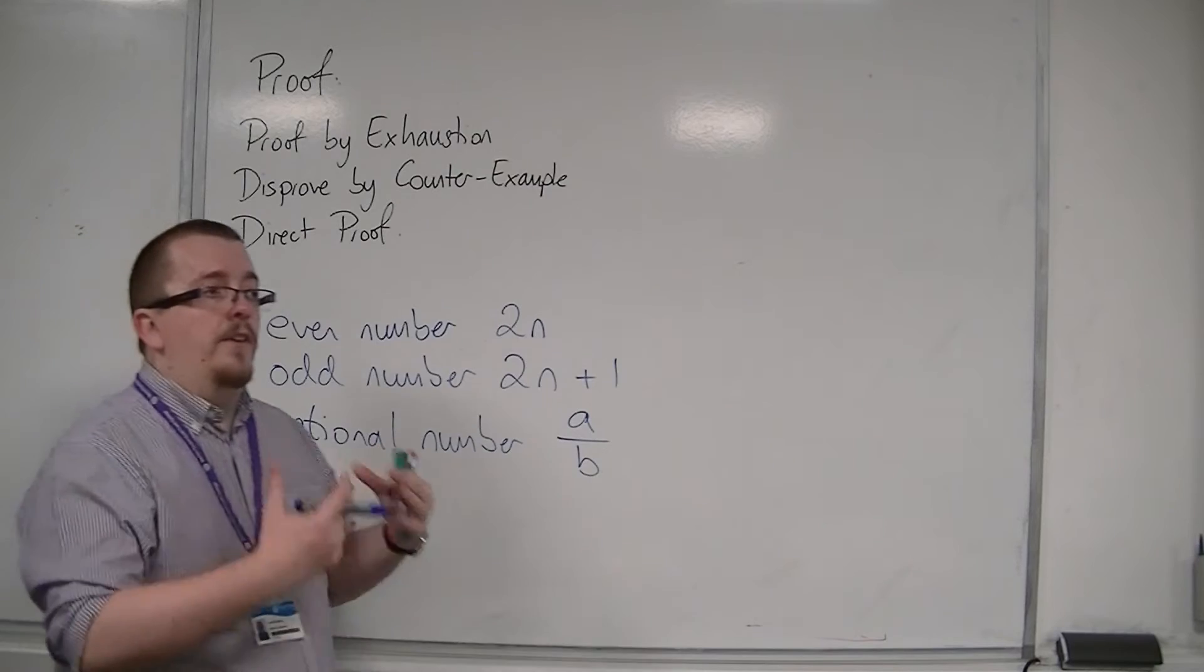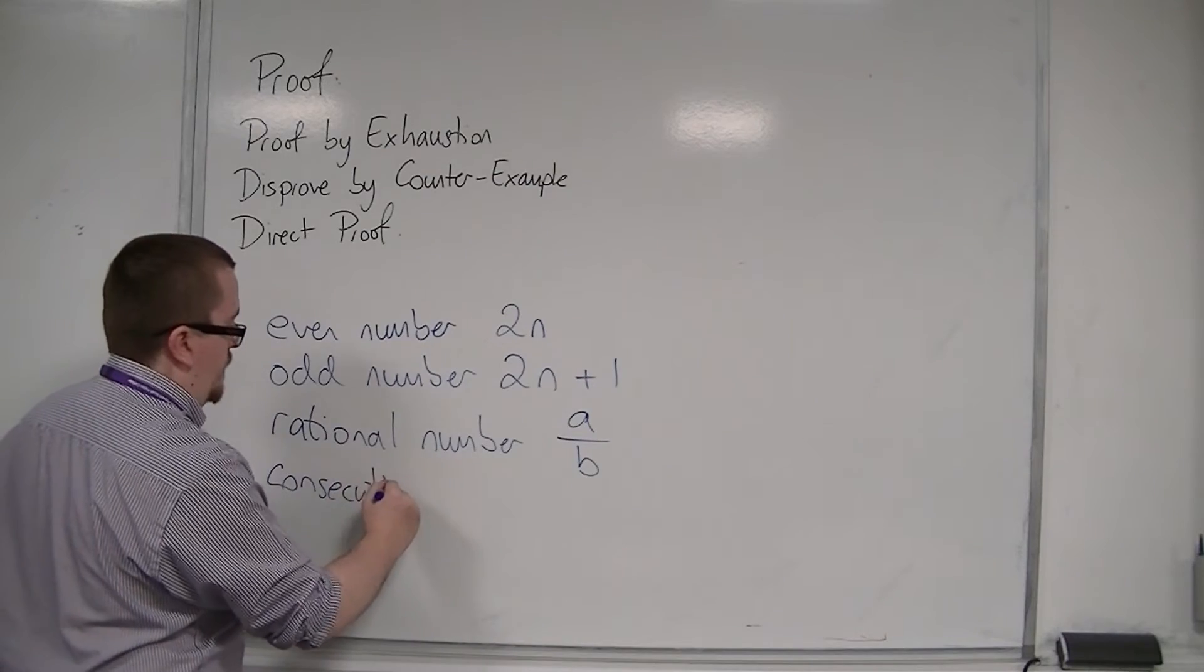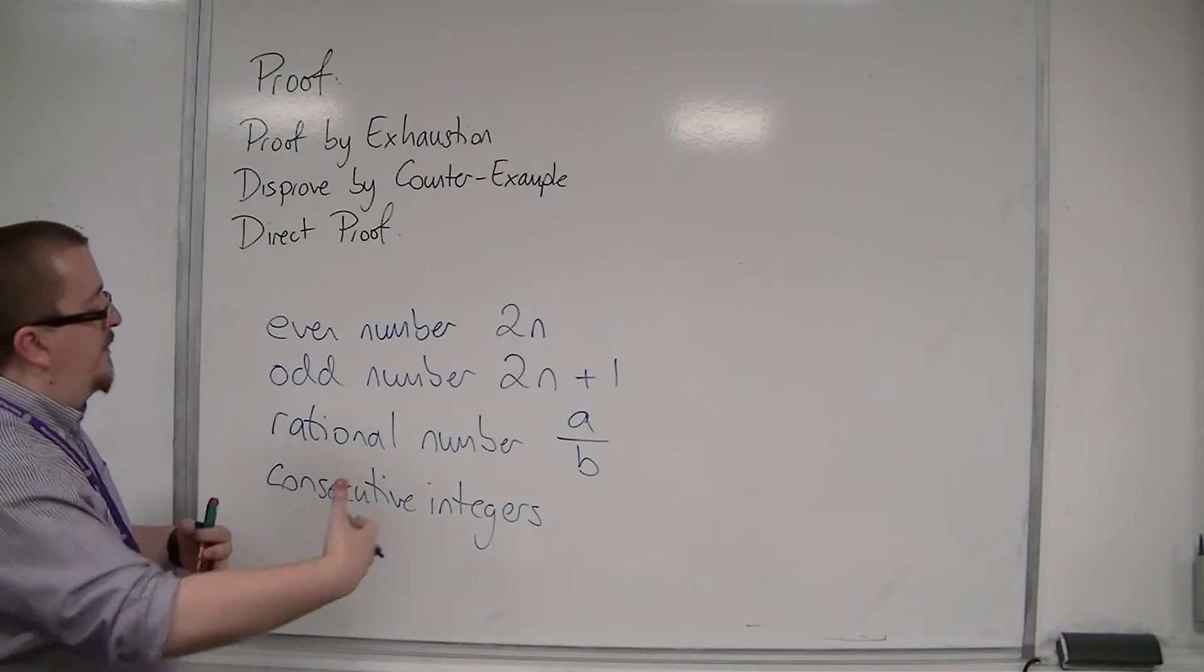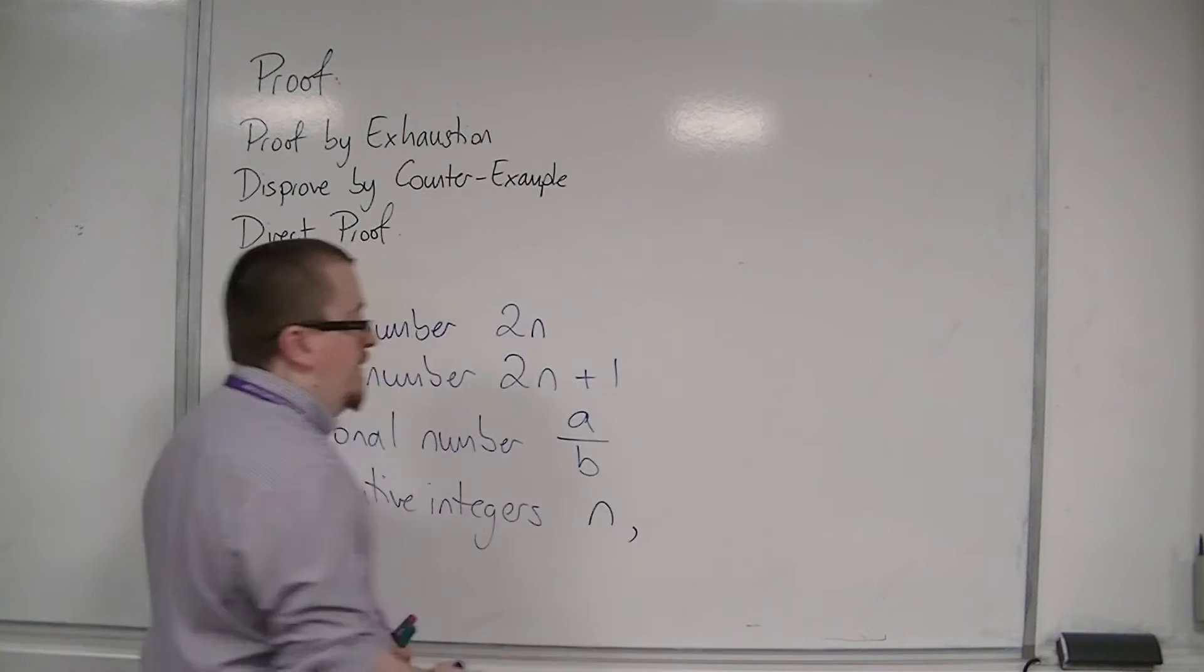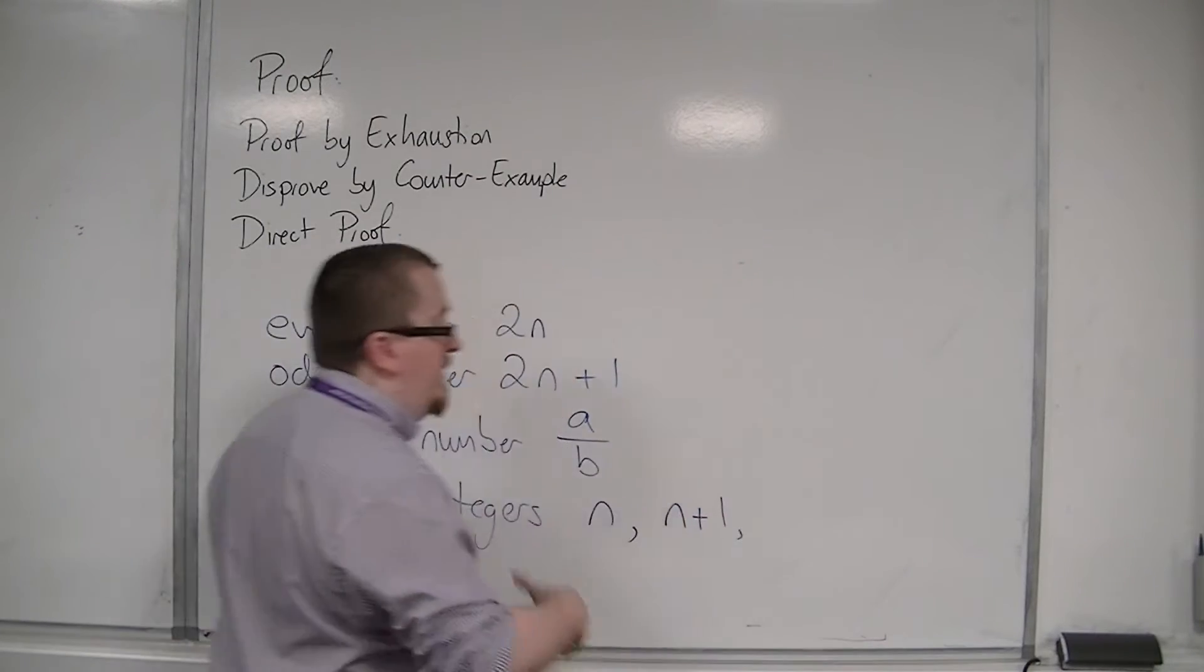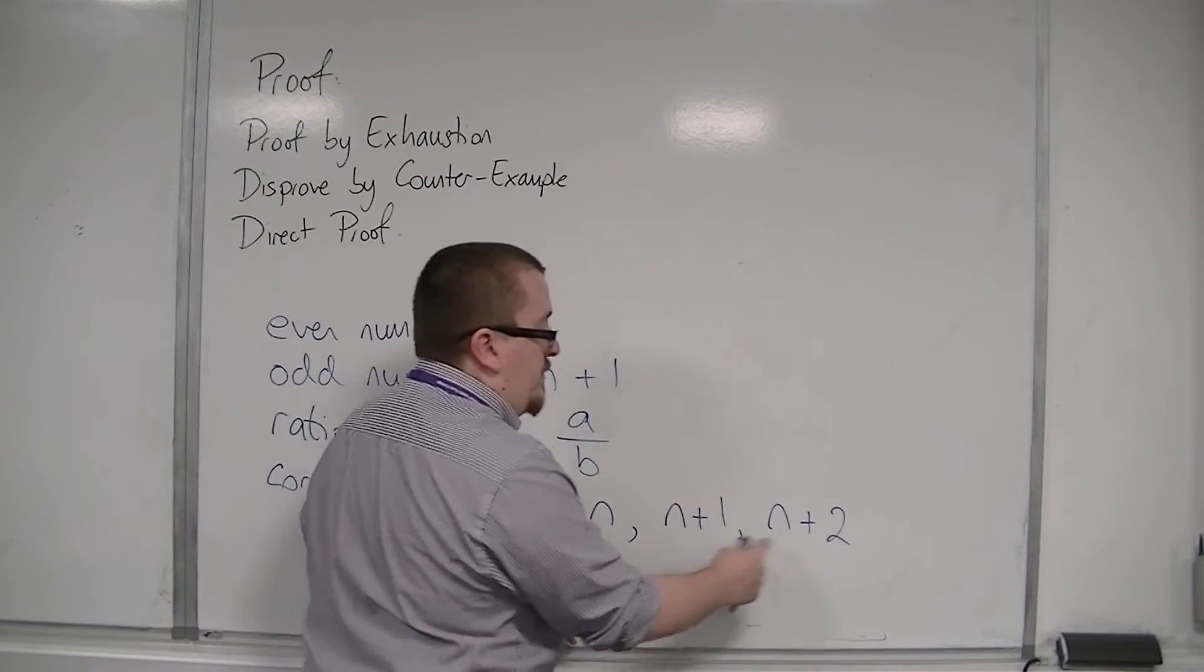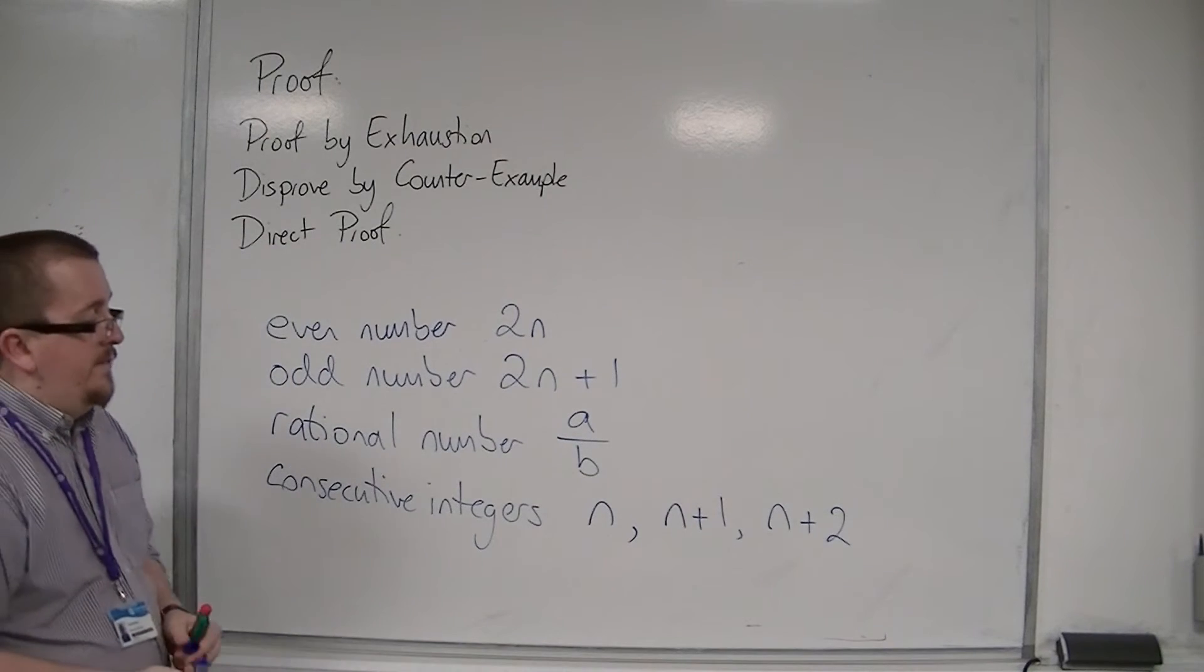You might be asked to look at consecutive integers. So consecutive integers are integers in order, one after the next. So if your first integer is n, then the next integer along will be n plus 1, and then the next one along after that will be n plus 2. And so these would be consecutive integers, like 1, 2, 3, or 10, 11, 12, or 21, 22, 23. That's what we mean by consecutive integers.